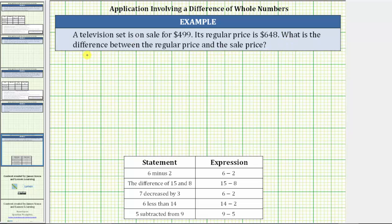To find a difference, we subtract. To find the difference between the regular price and sale price, we subtract the sale price from the regular price, which gives us 648 minus 499.